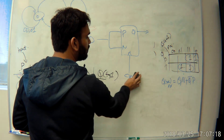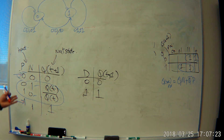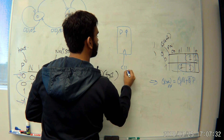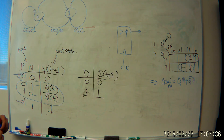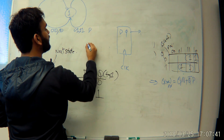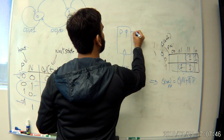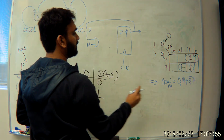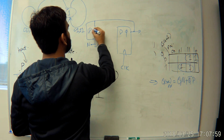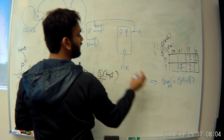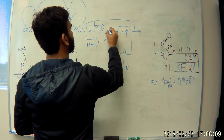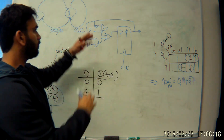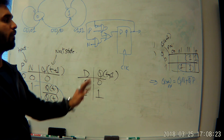Conversely, if we have a D flip-flop and want to implement the PN flip-flop using it, we use our derived equation Q(t+1) = Q·N + Q'·P. We take the previous state Q, AND it with N; take Q', AND it with P; then OR the two results and feed that into D. That gives us the PN flip-flop implemented using a D flip-flop. Once we have the equation and the table right, it becomes really easy to convert from one flip-flop to another.